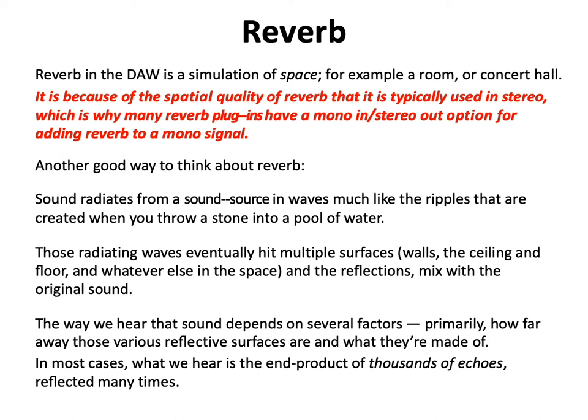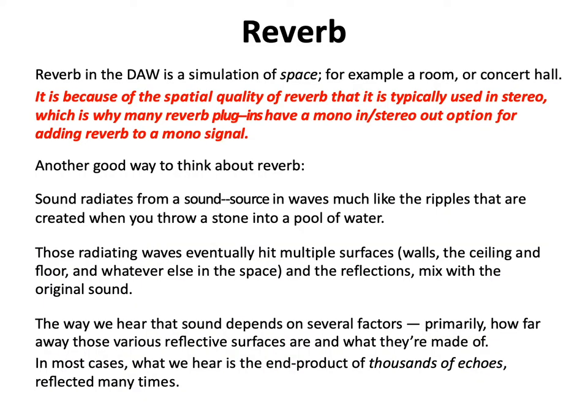Another good way to think about reverb: sound radiates from a sound source in waves, much like ripples created when you throw a stone into a pool of water. Those radiating waves eventually hit multiple surfaces like walls, the ceiling, the floor, or anything else in the space. The reflections mix with the original sound — we get the direct sound first, then a slight time later, reflections off the walls intermix with the direct sound.